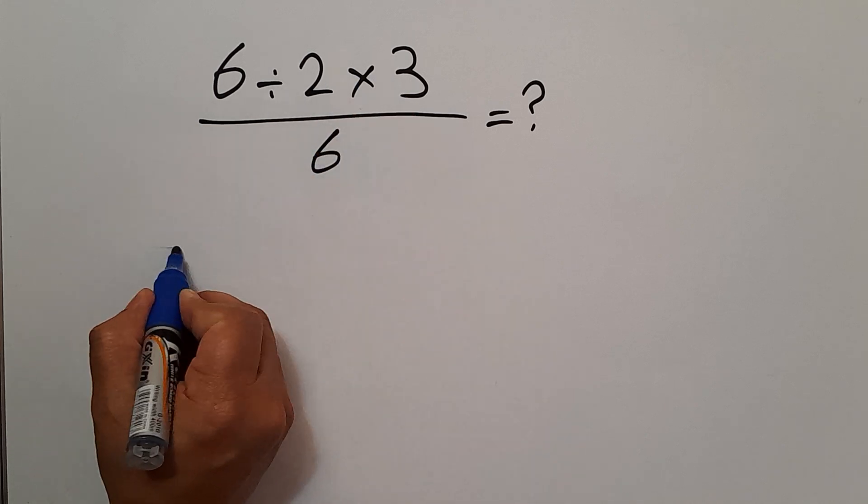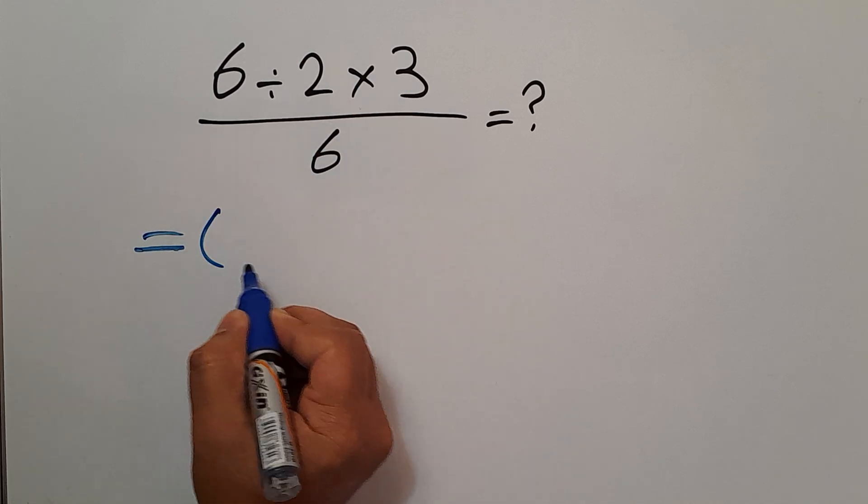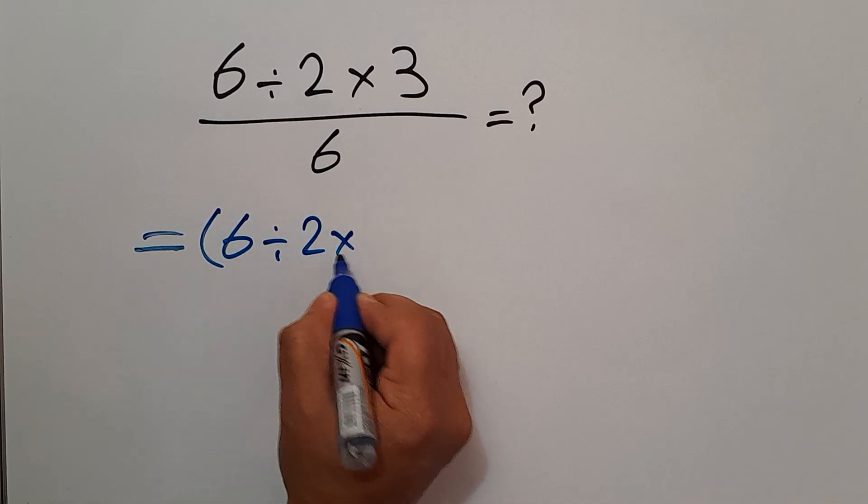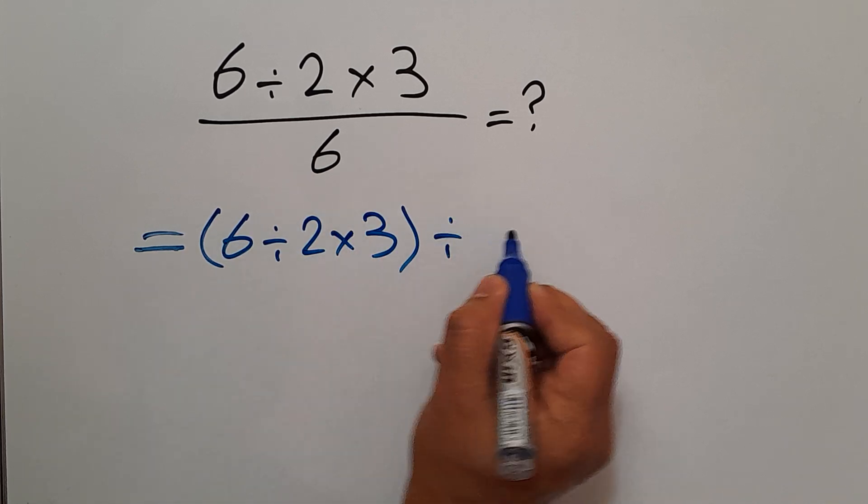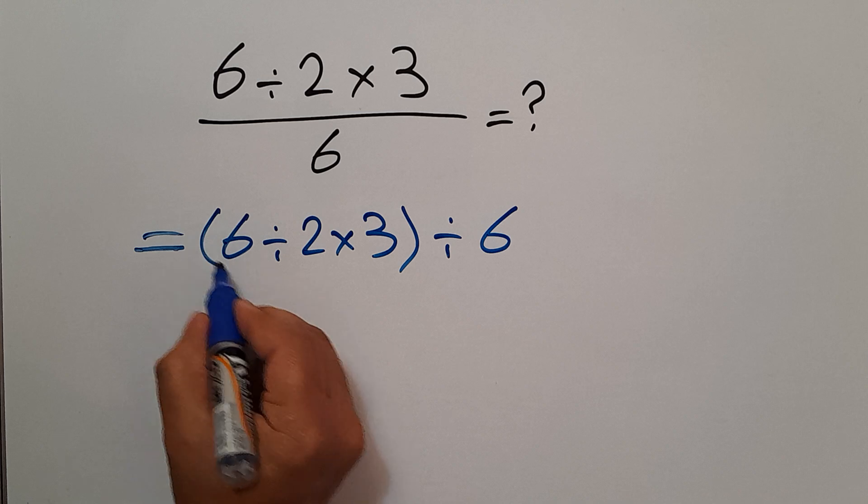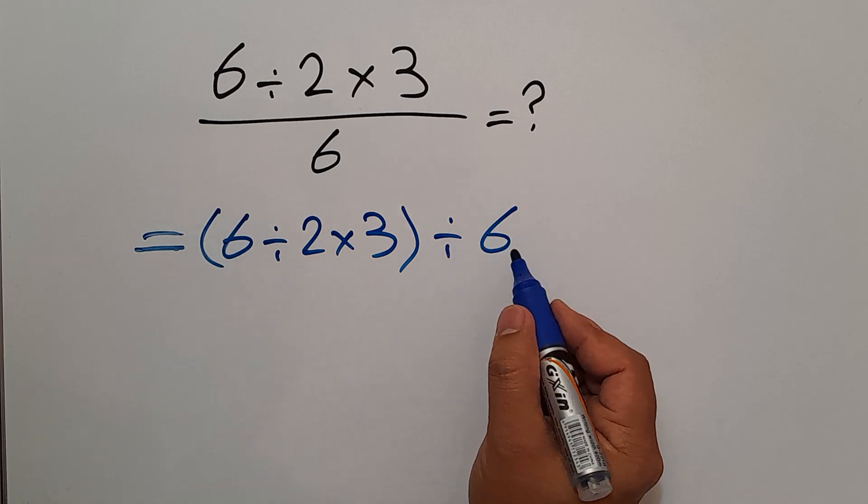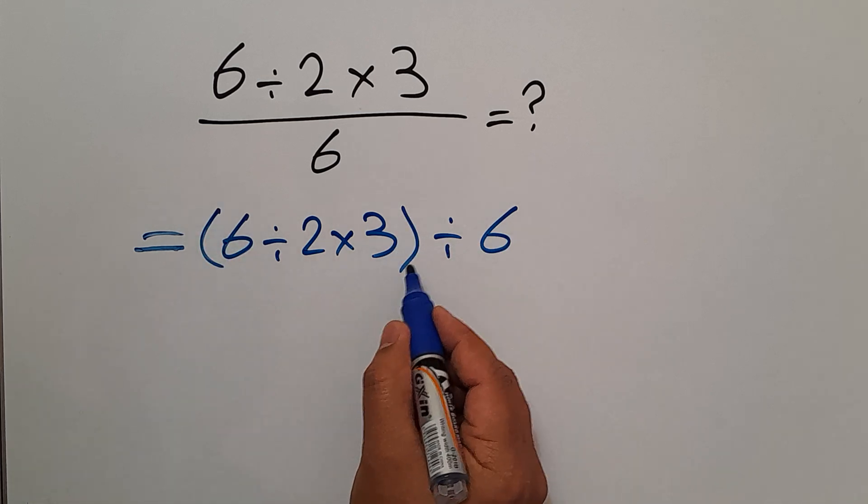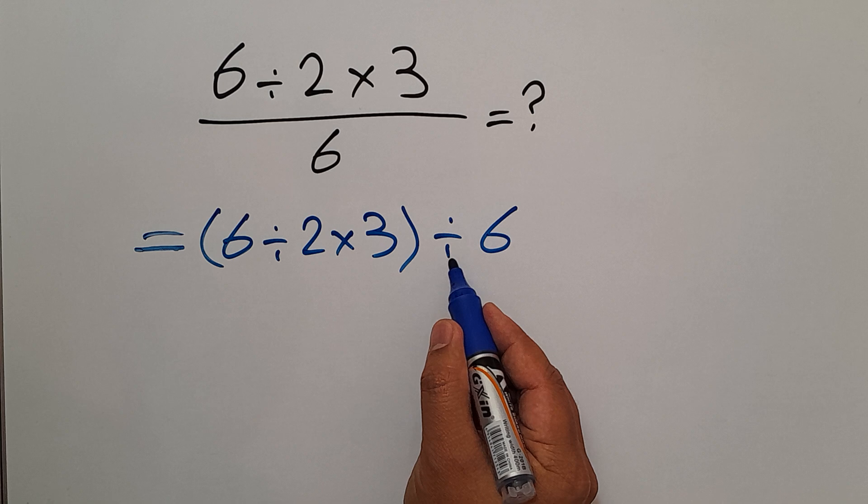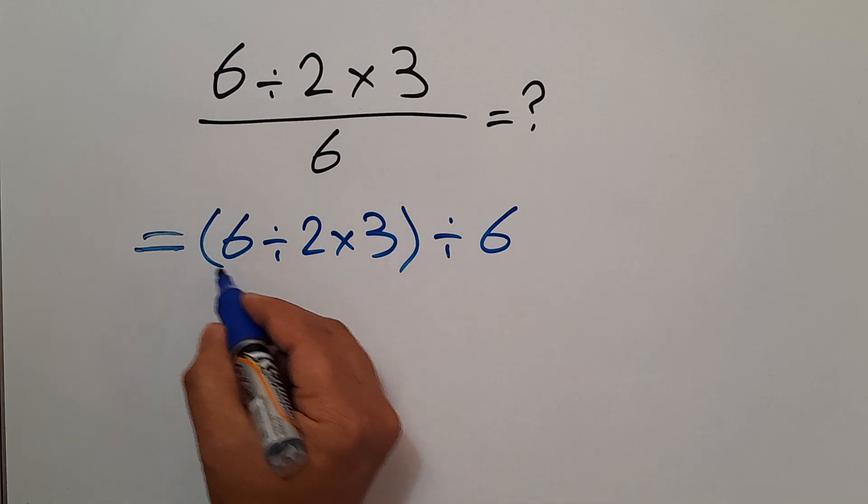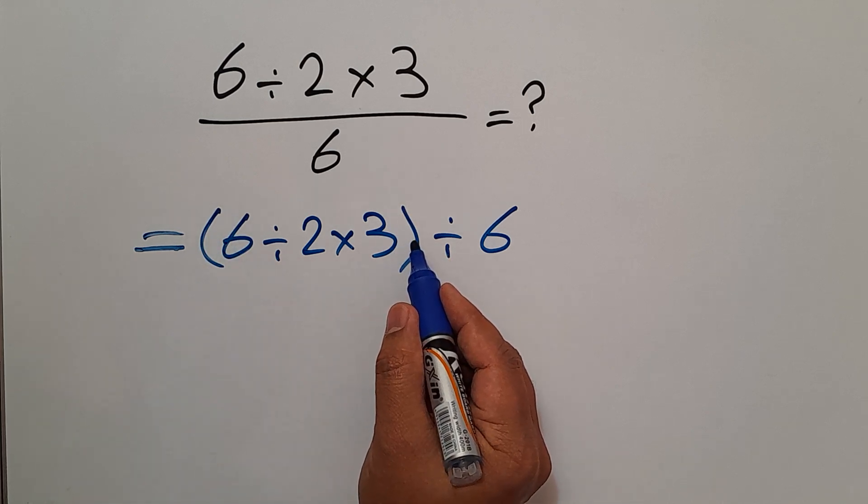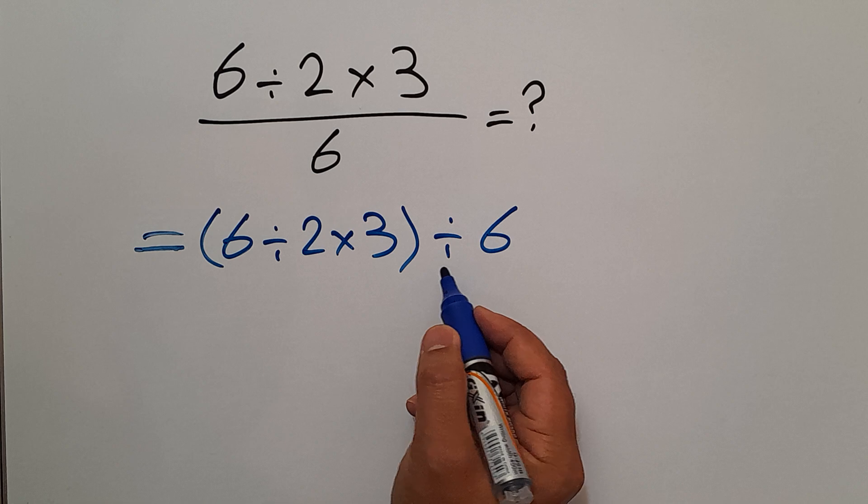be written as parentheses (6 divided by 2 times 3) divided by 6, the numerator divided by the denominator. Now we have these parentheses and this division. As we know, parentheses has a higher priority than other operations, so first